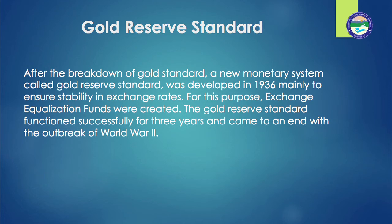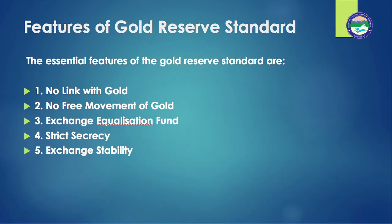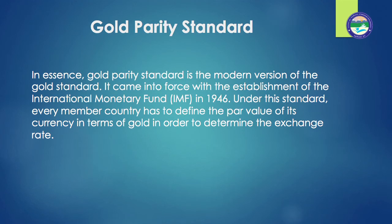The gold reserve standard functioned successfully for three years and came to an end with the outbreak of World War II. Gold parity standard: in essence, gold parity standard is the modern version of the gold standard. It came into force with the establishment of the International Monetary Fund (IMF) in 1946. Under this standard, every member country has to define the par value of its currency in terms of gold in order to determine exchange rates. The gold parity standard aims at maintaining stable exchange rates without interfering in the domestic monetary system of the member countries.